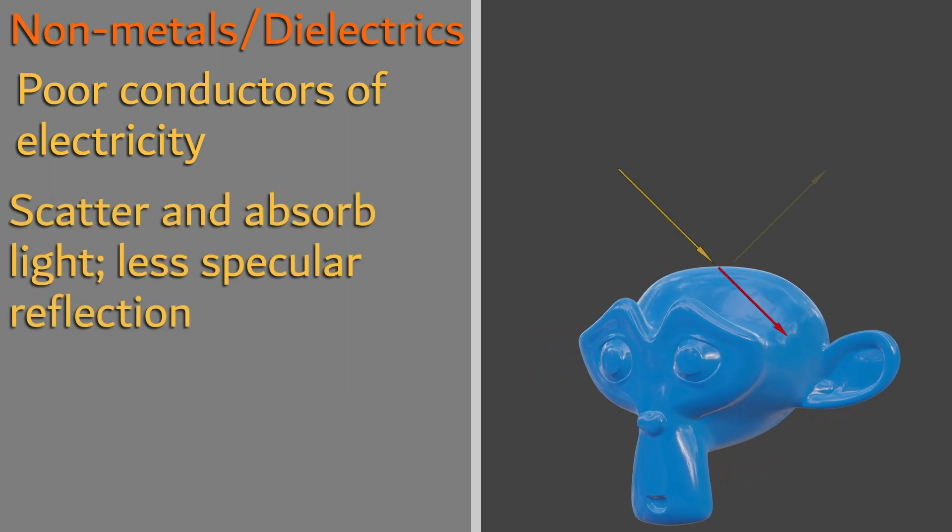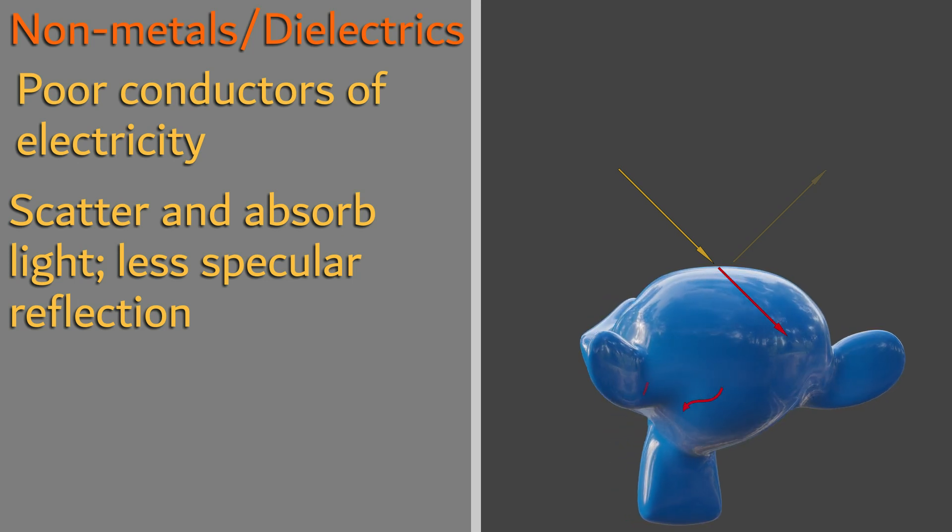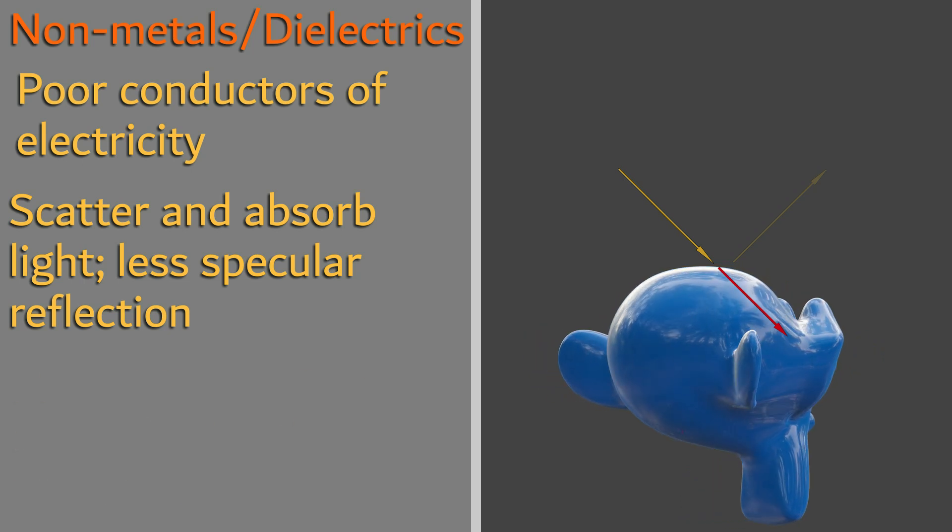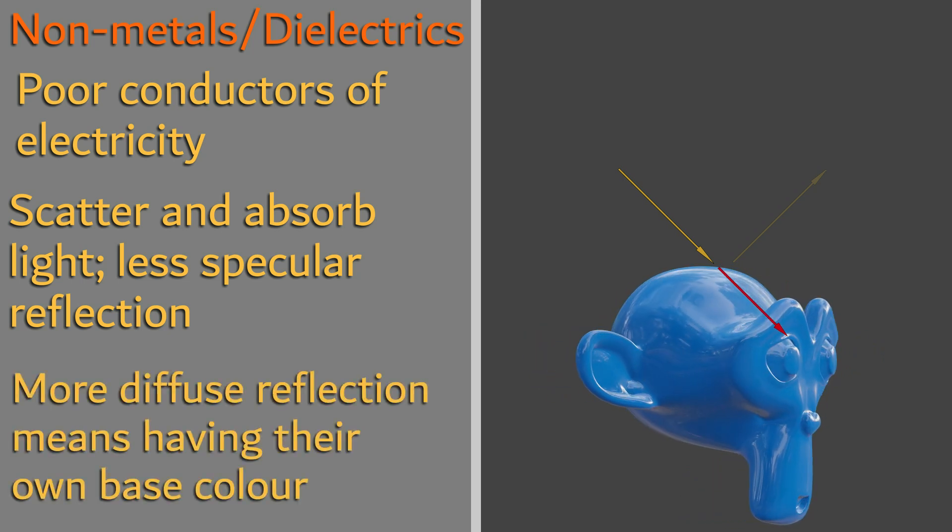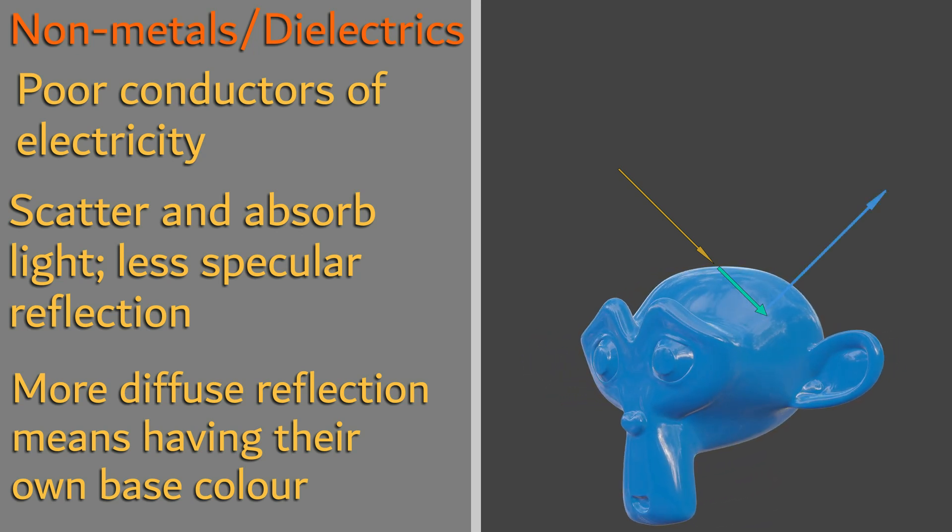This means they end up reflecting a smaller amount of light than metals. This also means that dielectrics will have an albedo, or base color, as light is able to refract and diffuse reflection is able to occur.